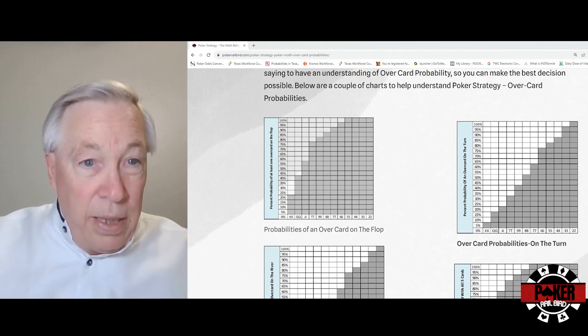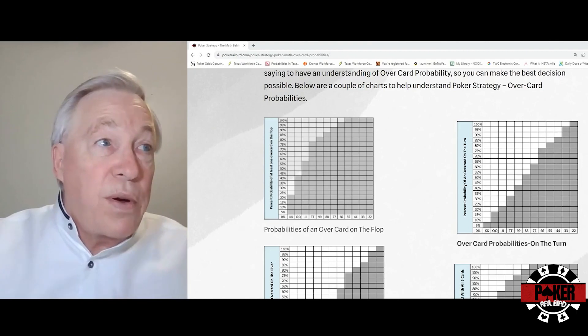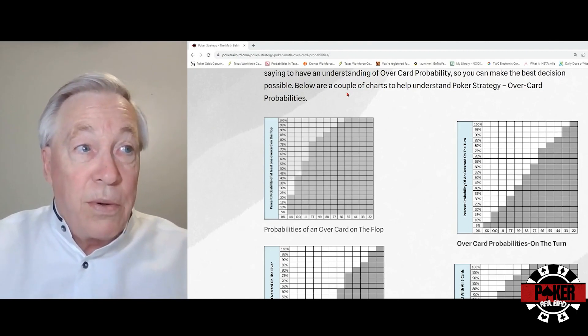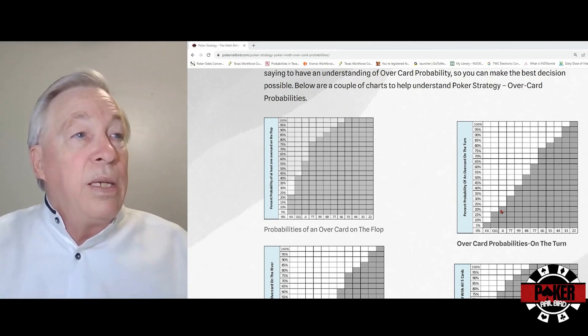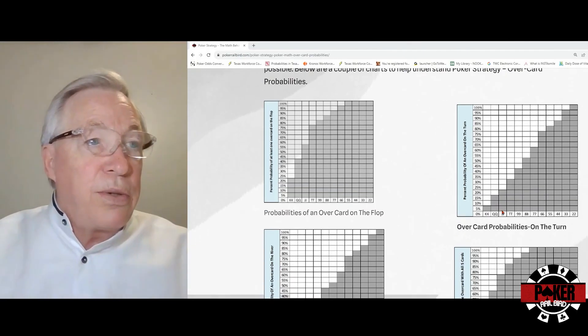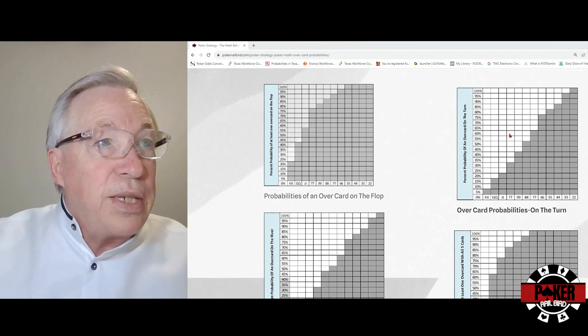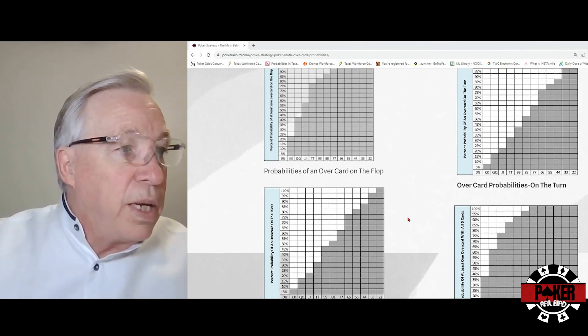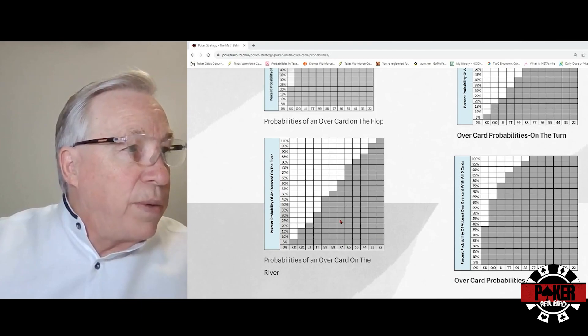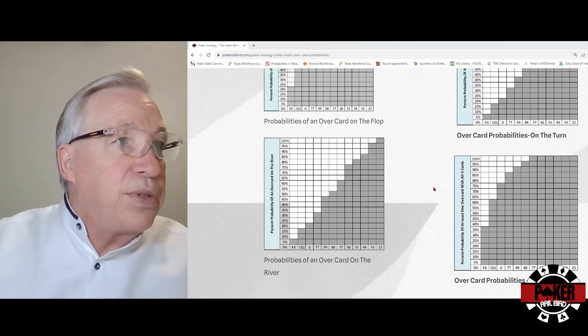If no overcard for some miracle doesn't come on the flop, then what are our opportunities on the turn and the river? With the sevens, we're a 60 percent chance of an overcard coming on the turn, and on the river we're the same 60 percent chance.